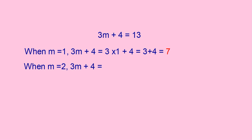When m is equal to 2, what is the value of 3m plus 4? That is 3 into 2 plus 4, which is 6 plus 4, you will get 10. Again, you are not getting 30. So m is equal to 2 is also not satisfied.